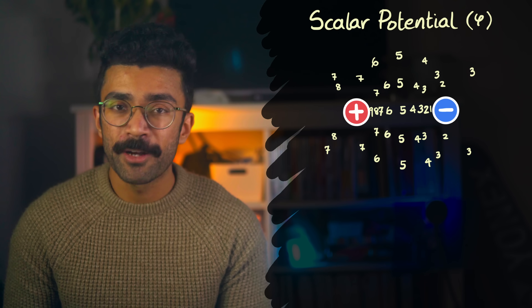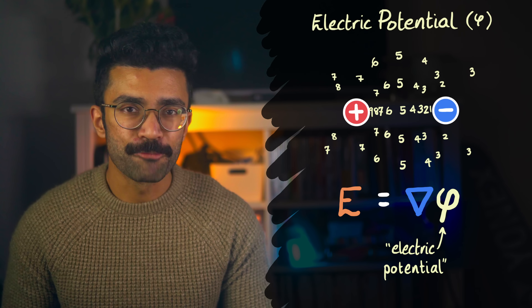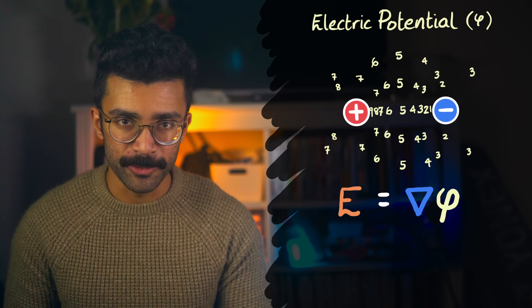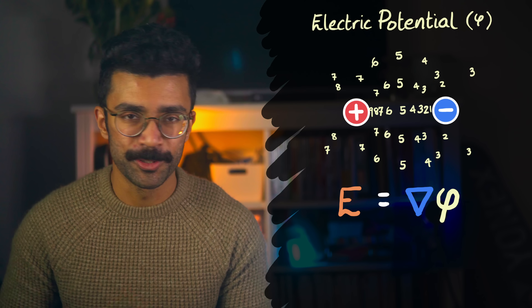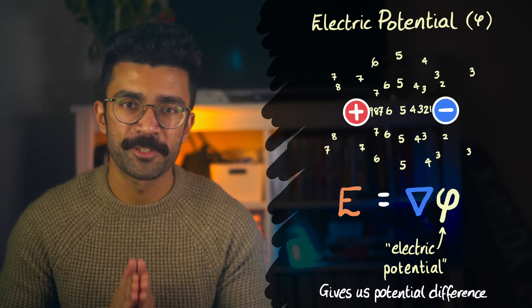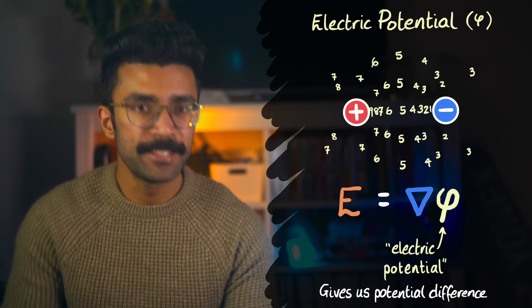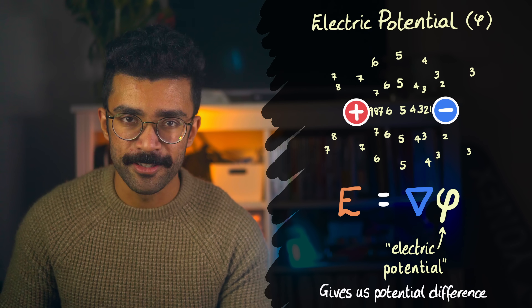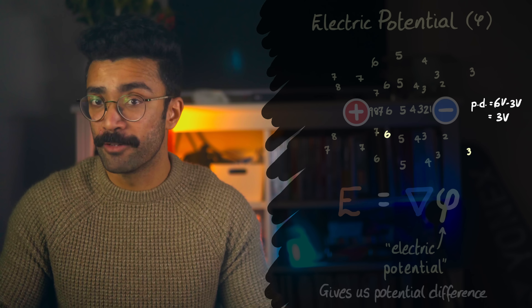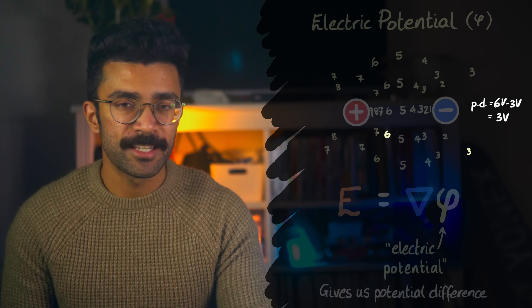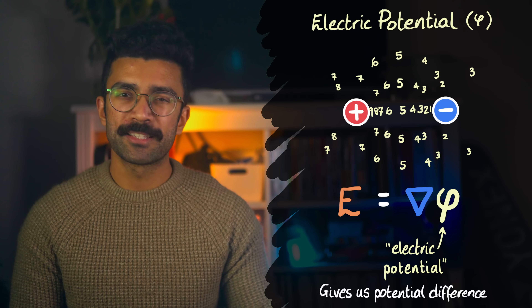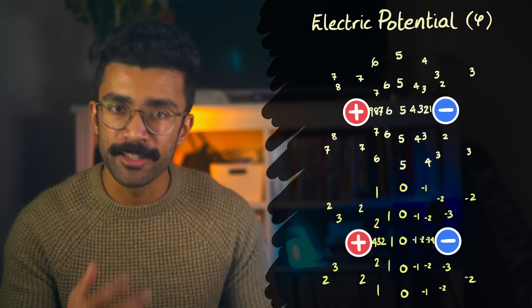The scalar potential we're talking about is called the electric potential. Mathematically, it's related to the electric field because the gradient of our potential gives us the electric field. The electric potential is what gives us potential difference, which is closely linked to voltage, which you may be familiar with from studying electric circuits. Potential difference is literally the difference in potential values between two points in space. So between two points, the potential difference might be 3 volts, for example. This potential difference tells us in which direction and with how much force any positive charge placed in the field will move.